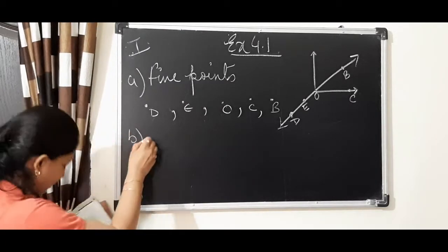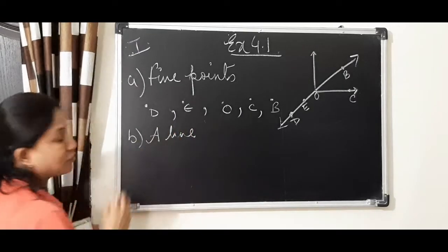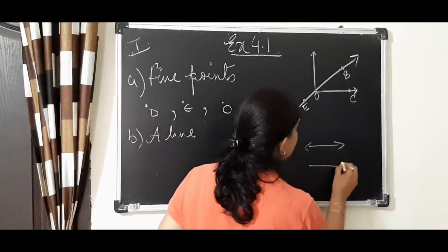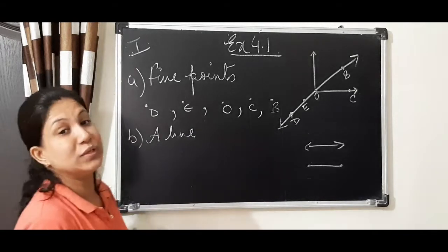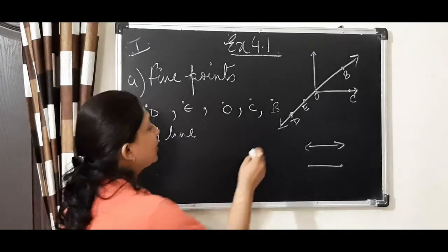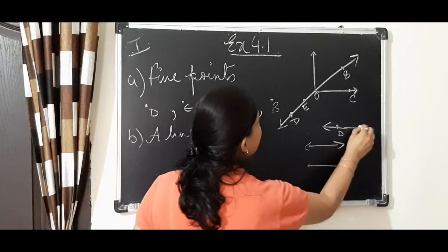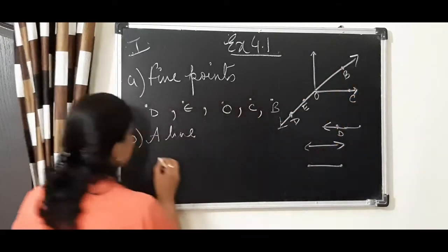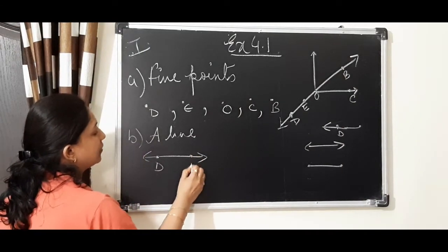Now in the second question they are saying to name a line. Children, one is a line and one is a line segment. A line will be extended from both sides. If you say D and O, this is wrong because D and O is a ray. We want D and B. So you can take one line like D and B.